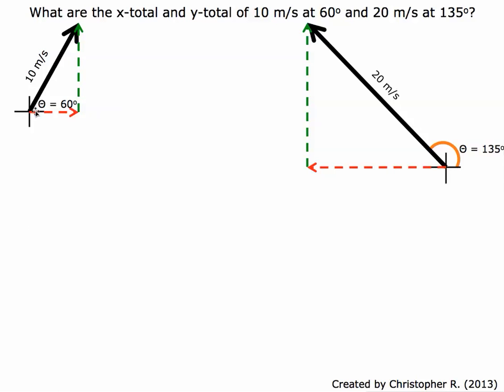The next thing we need to do is calculate the x and y component of each one of these. Let's do these one at a time. To find the x component, we're going to use cosine equals adjacent over hypotenuse. Rearrange it so we've got hypotenuse times cosine. So we've got 10 meters per second times cosine of 60 equals 5 meters per second. So this red dashed line is 5 meters per second.